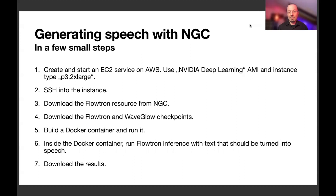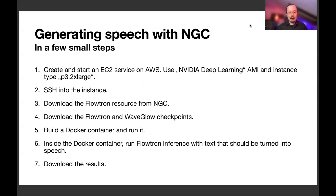Once you run the container, you can run Flowtron in inference mode inside it. You give it a text, maybe a couple of further parameters, hit enter, and it will generate a WAV file for you. Then you just download the WAV files. In essence, it's seven tiny little steps. Most time is spent spinning up the instance and waiting for the Docker container to build, but this is perfectly normal. The actual part of setting everything up and generating vocals is not a problem — just a handful of steps and you have your speech generated.